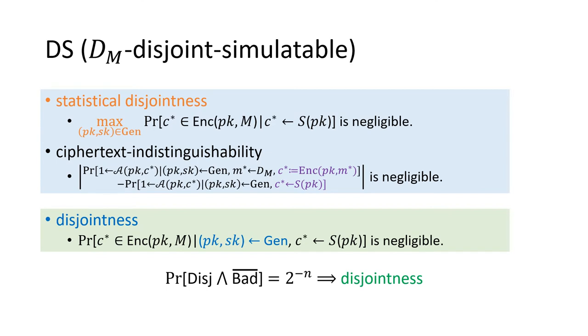Here, we show the definition of DS. We say a PKE scheme is DS-secure if there exists a simulator S, given the public key as input, satisfying the following two requirements. The first is statistical disjointness. Roughly speaking, the simulator almost always outputs a wrong ciphertext.